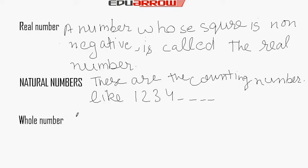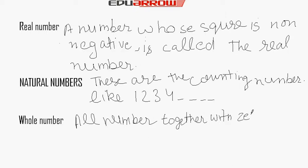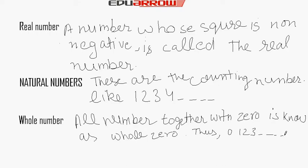Whole numbers - all numbers together with zero is known as whole numbers. Thus, 0, 1, 2, 3 are whole numbers.